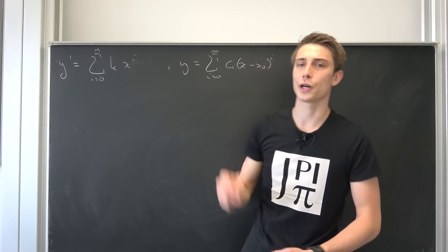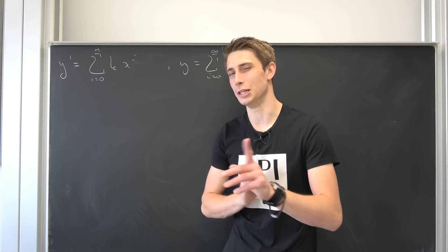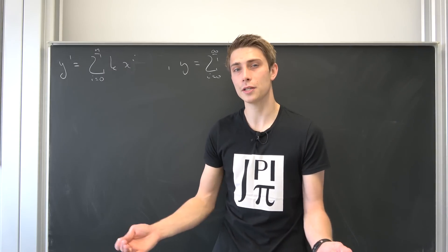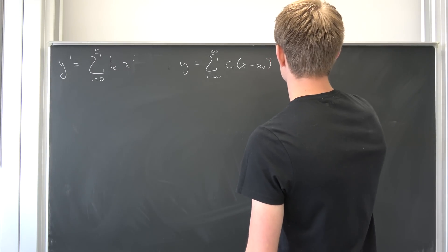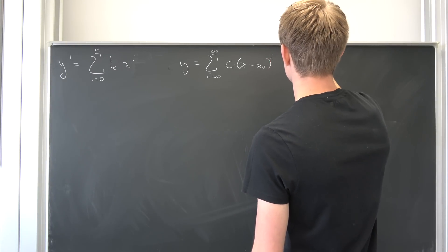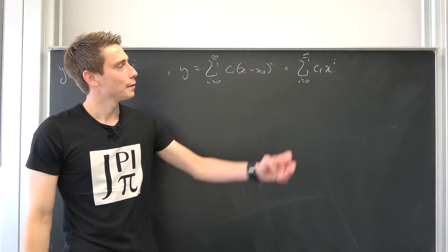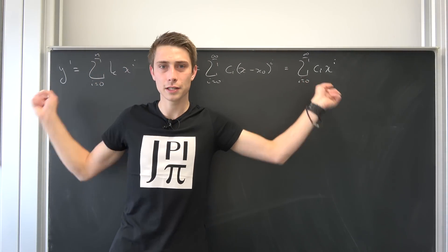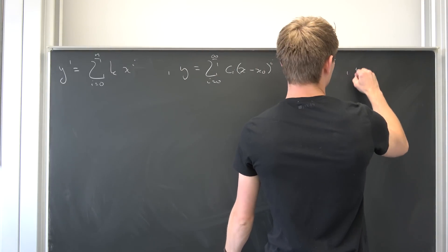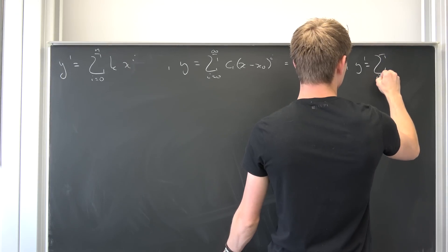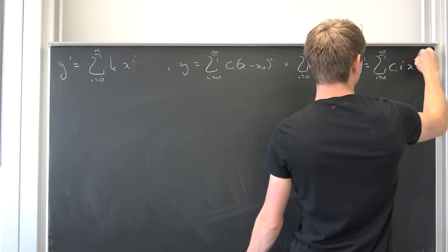Now we just take a look at the coefficient in front of y prime — it's just a constant function. So it doesn't matter what value for x naught we plug in; it's going to stay as it is. It's complex differentiable and analytic at every point x equals x naught. So why not use 0 as x naught to make things easier? We end up with y equals the sum from i equals 0 to infinity of c_i x to the i. But if you notice we have y prime, so we also have to differentiate this: y prime is the infinite sum from i equals 0 to infinity of c_i times i times x to the i minus 1.